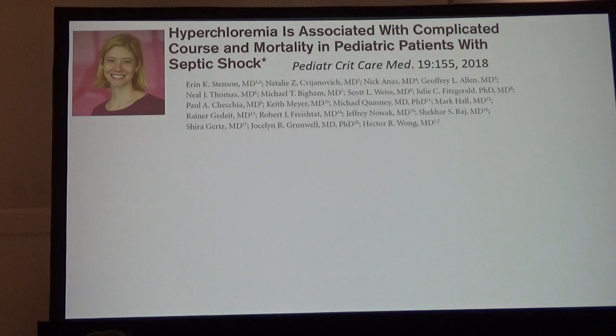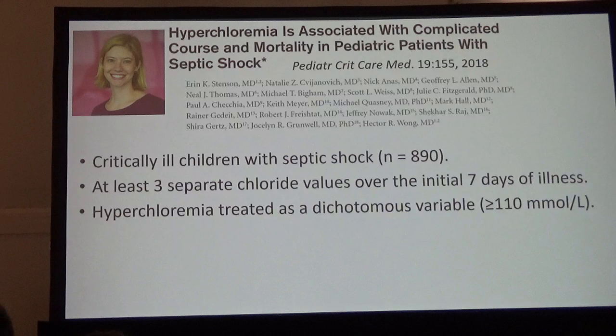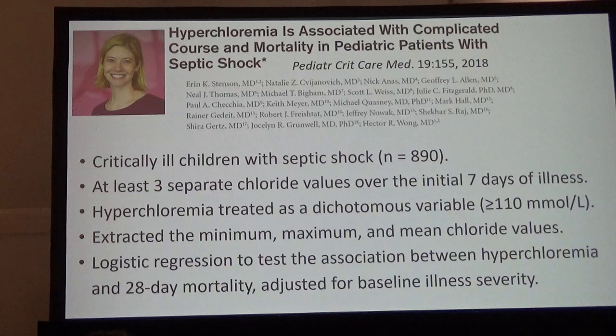This is Erin Stenson, who is a fellow in our program and is now a faculty member at the University of Colorado. She looked at this issue in critically ill kids with septic shock — almost 900 patients who had at least three separate chloride values over three days during the initial seven days of illness. She treated hyperchloremia as a dichotomous variable above or below 110 millimoles per liter, and used logistic regression adjusting for baseline illness severity using the PRISM score, which is analogous to APACHE.